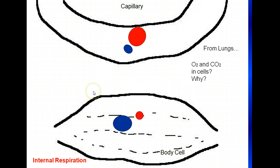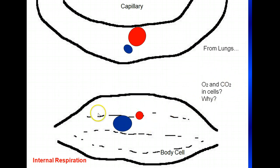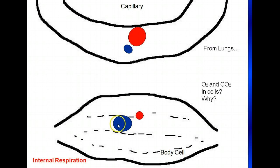Now let's talk about the O2 and CO2 levels in the cells and why they are the way they are. When cells carry out their functions — whether it's a muscle cell contracting, as I've drawn here, or any other cell — they use oxygen. And when a cell uses oxygen, it produces CO2. So what you're going to see inside a cell is a higher concentration of carbon dioxide and a lower concentration of oxygen, because the cell used the oxygen and produced CO2 in the process of making energy.